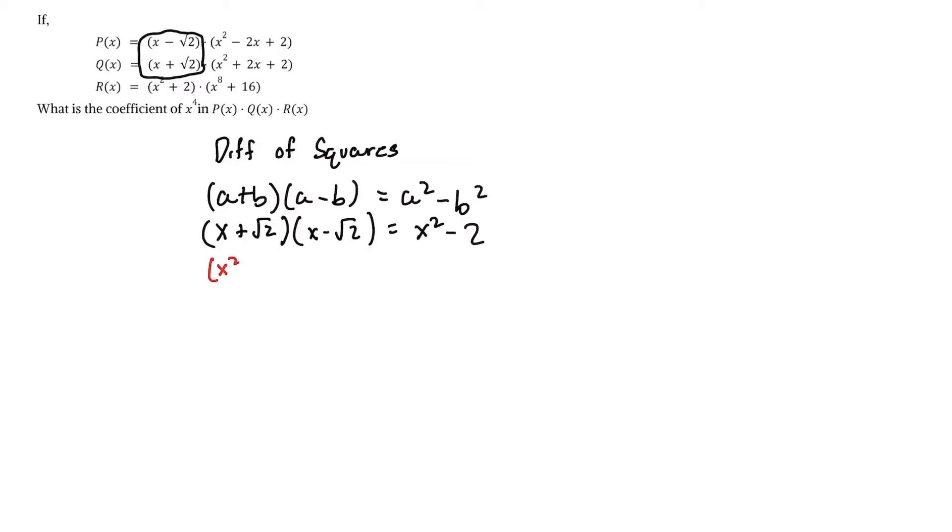So then using x² - 2, which of the four remaining would it pair nicely with? That's right, it's x² + 2. When we multiply these together, we'd get x⁴ - 4.